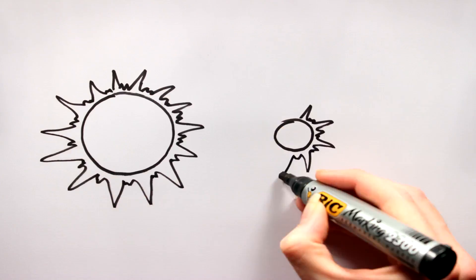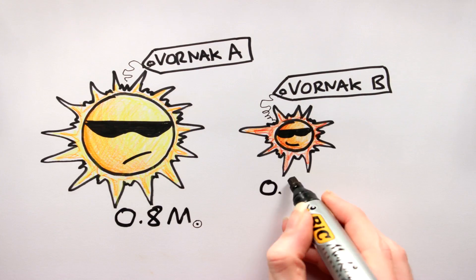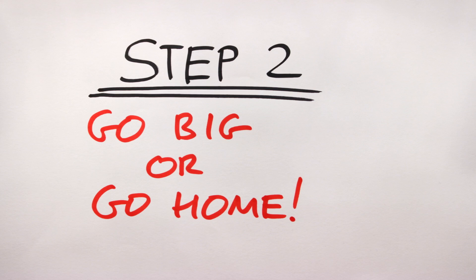Here's my stars: Vornak A and B. And I'll set their masses at 0.8 and 0.6 solar masses. Step 2: